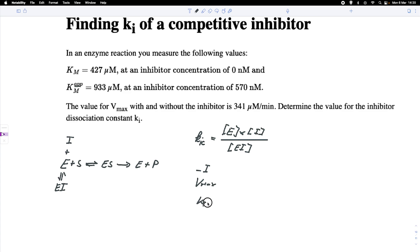So this would be the values without the inhibitor. And with the inhibitor at a given concentration, we would get the Vmax apparent value and the KM apparent, and as I said, the apparent indicates that we've got an inhibitor.